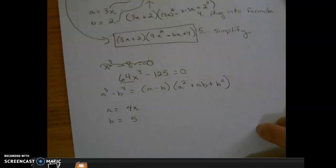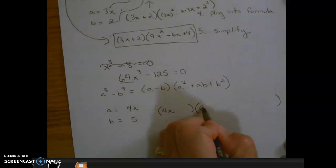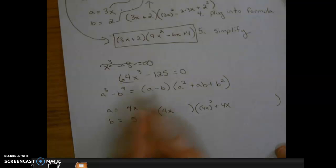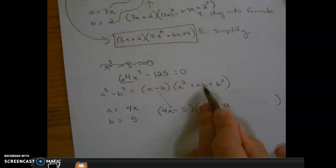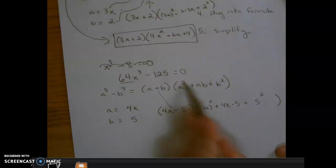Next thing we're going to do is plug it into the formula. We're going to plug the 4x in for a and 5 in for b. The signs come straight down. This is a times b, so 4x × 5. Notice the square stays on the a term, the square stays on the b term.